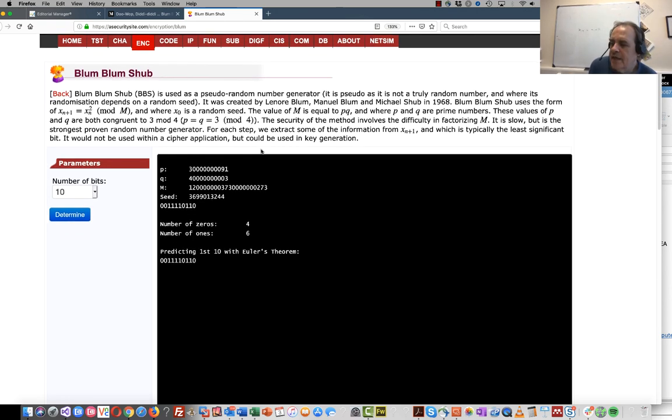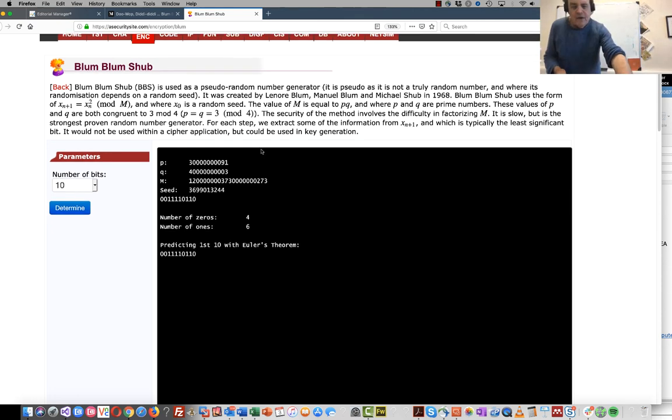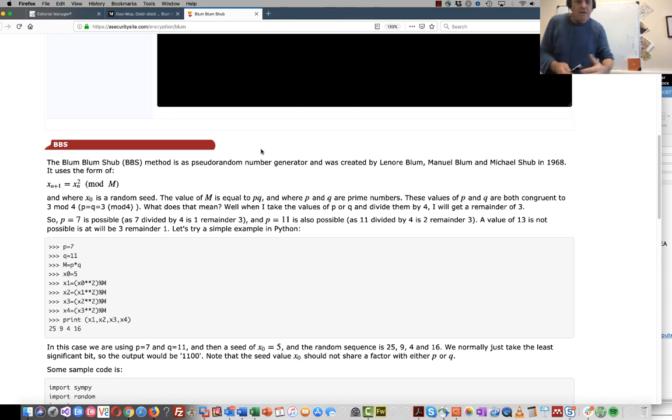I'm going to outline a random number generator method called Blum Blum Shub. With Blum Blum Shub we have a provable random number generation process. So what does it actually involve? The core of it is that we have a sequence defined as x_{n+1}.